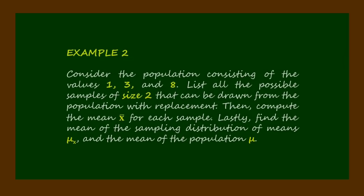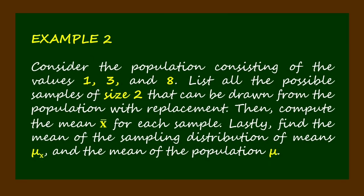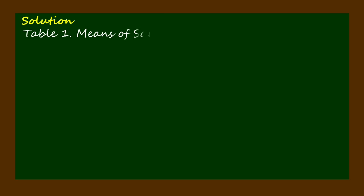Now let's have Example 2. Consider the population consisting of the values 1, 3, and 8. List all the possible samples of size 2 that can be drawn from the population with replacement. Then compute the mean bar x for each sample. Lastly, find the mean of the sampling distribution of means mu sub x and the mean of the population mu. For the solution, let's construct Table 1: means of samples drawn with replacement from the population.